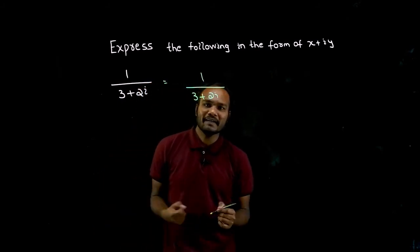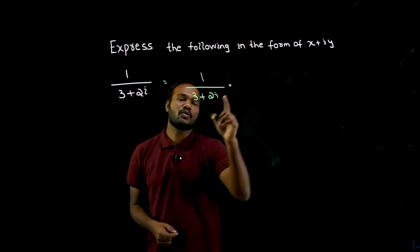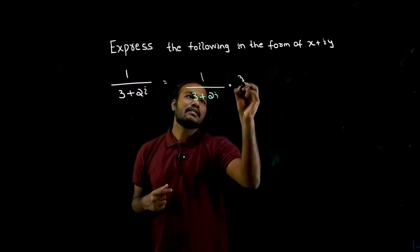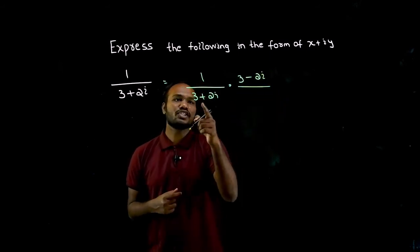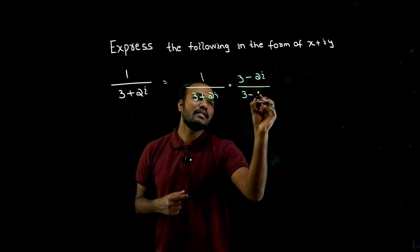What is the conjugation of 3 plus 2i? Conjugation of 3 plus 2i is 3 minus 2i divided by again conjugation of 3 plus 2i is 3 minus 2i.